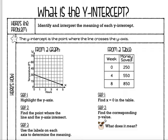Here's the problem. We are going to identify and interpret the meaning of each y-intercept. So first of all, when you have a graph, you can see the y-intercept because it's going to be the point where the line crosses the y-axis. And when you have a table, it's even easier to find the y-intercept. So let's start here by highlighting something that's important. The y-intercept is the point where the line crosses the y-axis.